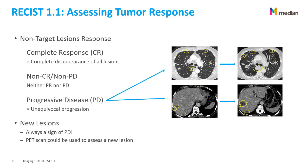This slide shows the non-target lesion response. These lesions are only followed qualitatively by the reader. The image on the left is the baseline, while the one on the right is the time point under study. In both examples, you can see an increase in tumor size from one time point to the other. Therefore, it is recorded in both cases as unequivocal progression, meaning both would be classified as progressive disease (PD).